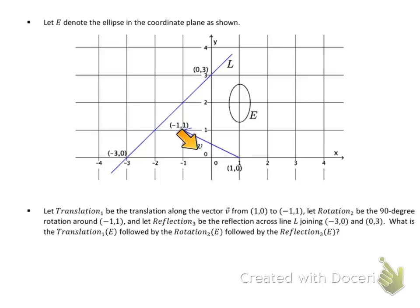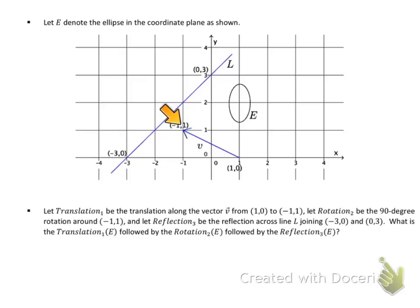We also have rotation 2 — a 90-degree rotation around (-1, 1). And reflection 2 is a reflection across this line.